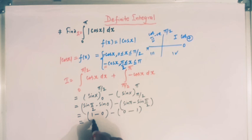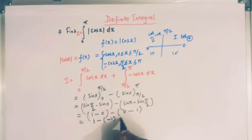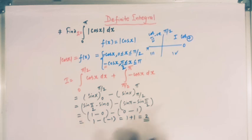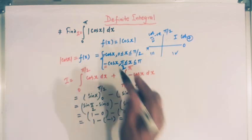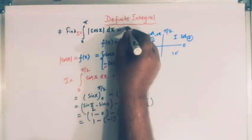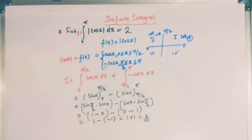So we have 1 minus 0, which gives 1, and then minus of (0 minus 1), which gives minus of minus 1, that is plus 1. So we have 1 plus 1, that is 2. The value of this integral is 2.